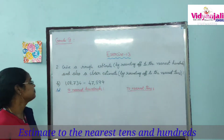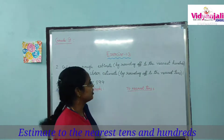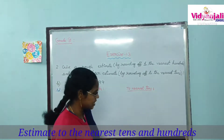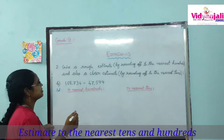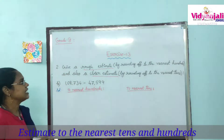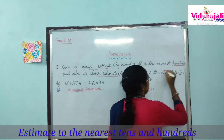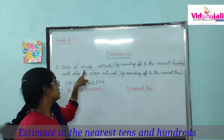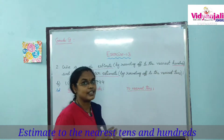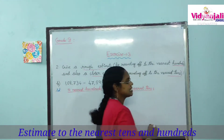Now see question number 2. It says: give a rough estimate by rounding off to the nearest hundreds, and also a closer estimate by rounding off to the nearest tens. Rough estimate means rounding off to the nearest hundreds place, and closure estimate means rounding off to the nearest tens place.